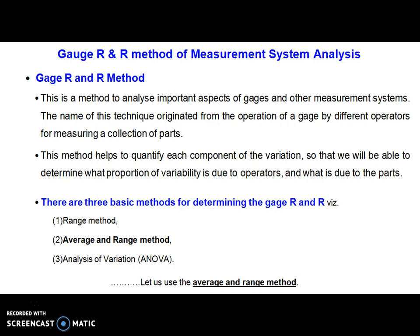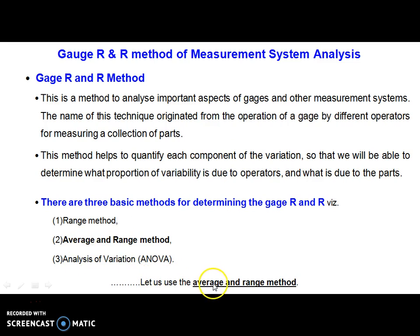There are three basic methods used to calculate the R&R value. First is the range method, second is the average and range method, and the third is the analysis of variance — that is, the ANOVA method.